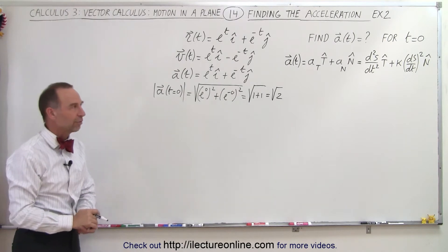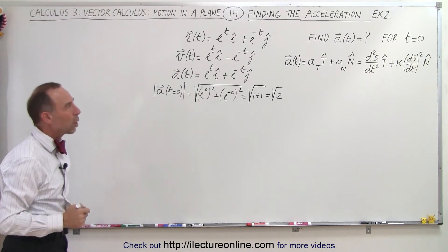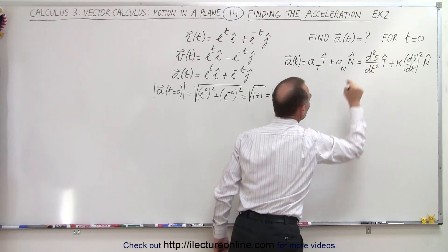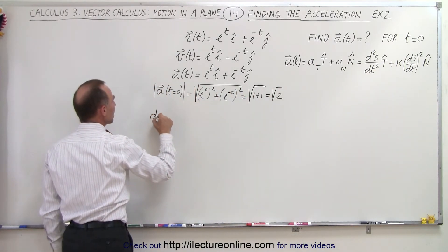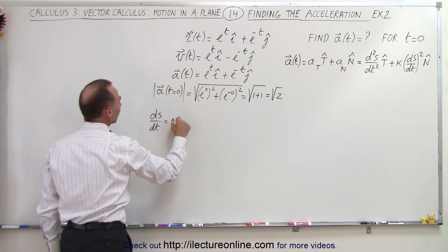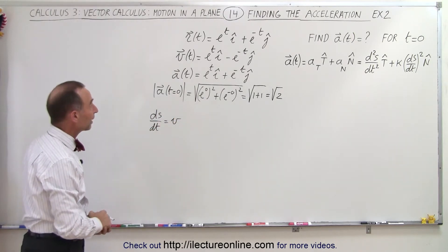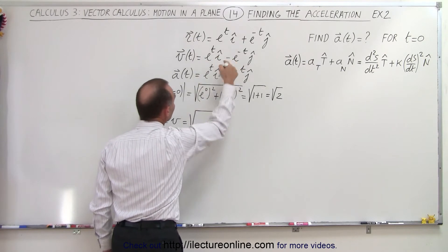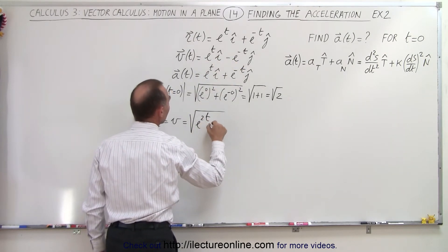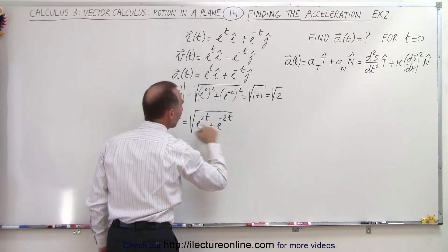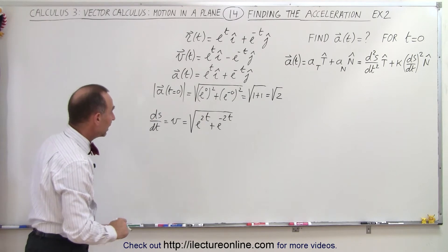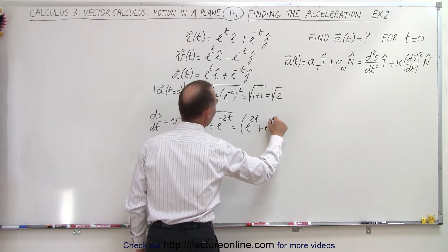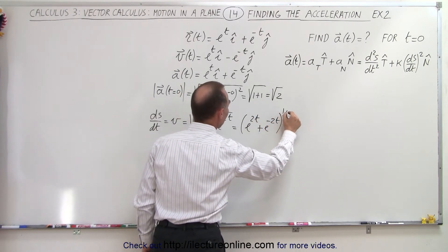So that's the magnitude of the acceleration vector. But now we need to find the tangential component. So here we have a sub t, and that's defined as the second derivative of s with respect to time. So ds/dt is considered the velocity vector, so what we can do is find the magnitude of the velocity vector, which would be equal to the square root of e to the two t plus e to the minus two t — that is, the quantity e to the two t plus e to the minus two t to the one half power.